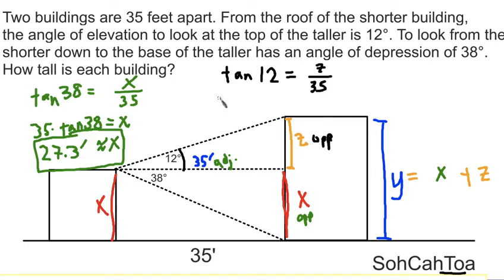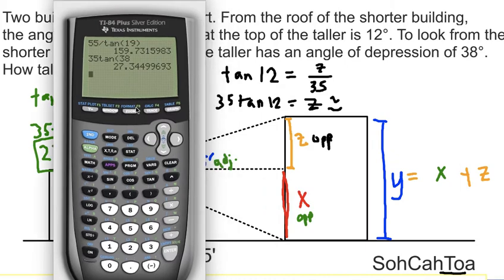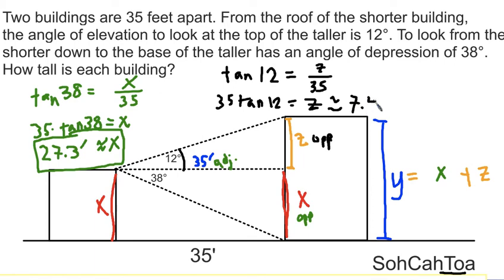So this time, the tan of 12 times 35, or 35 tan 12, will give us the value of z, which represents the difference in the two heights of the two buildings. So 35 times the tangent of 12 is approximately 7.4 feet.